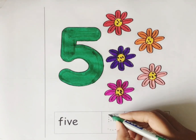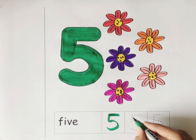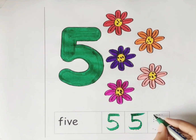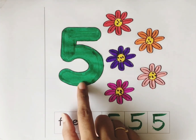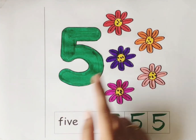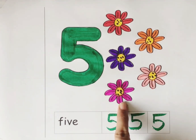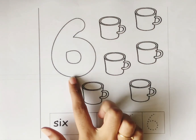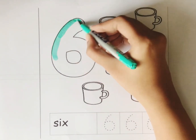Let's trace the number 5. Number 5. 5. Let's count the flowers: 1, 2, 3, 4, and 5. We have 5 flowers. Number 6. Let's color the number 6. Sea green color.